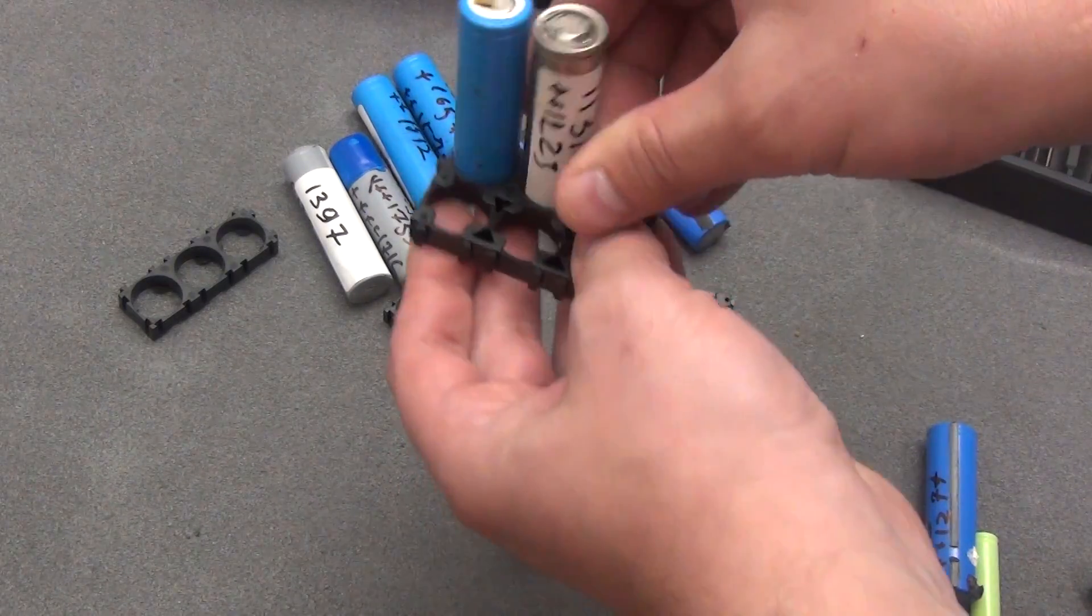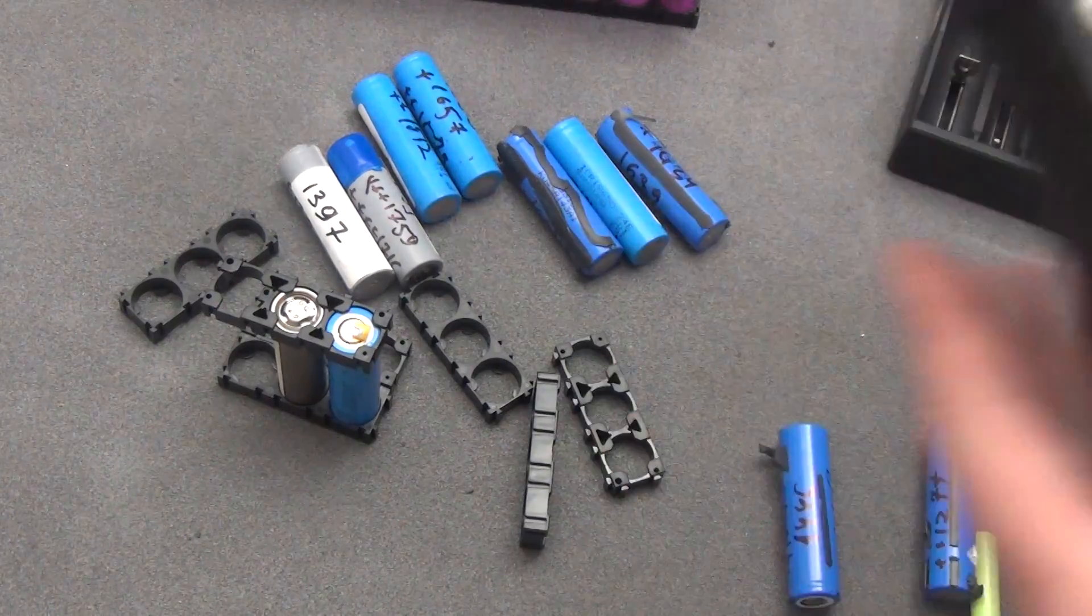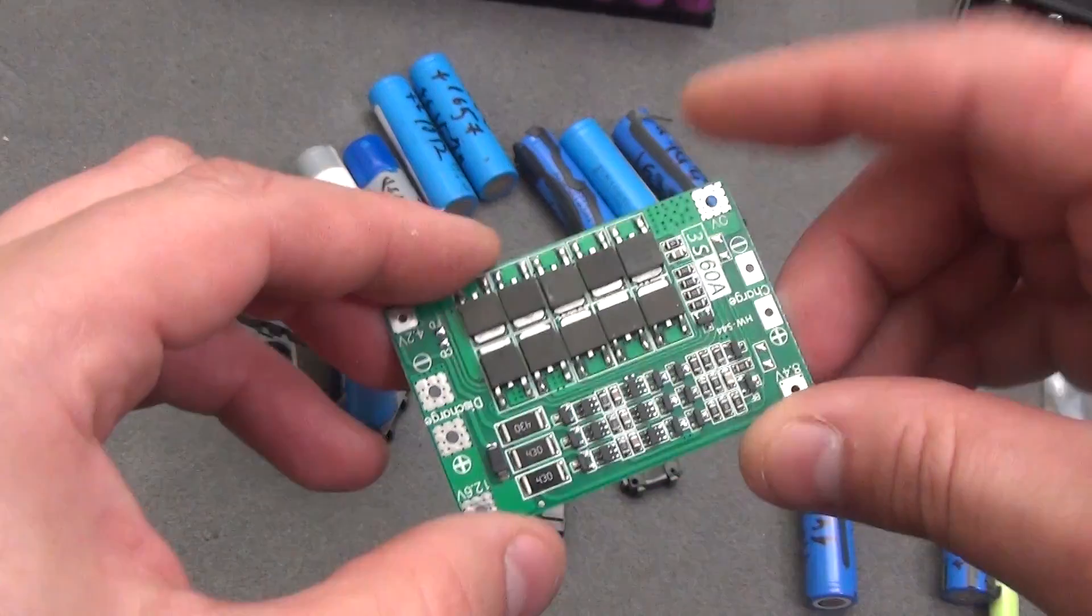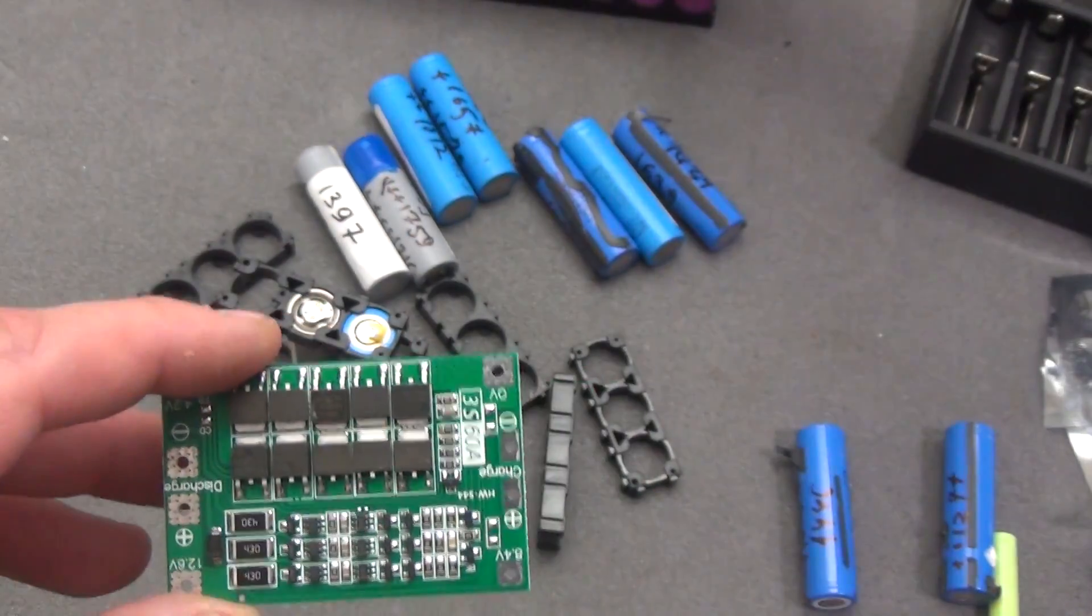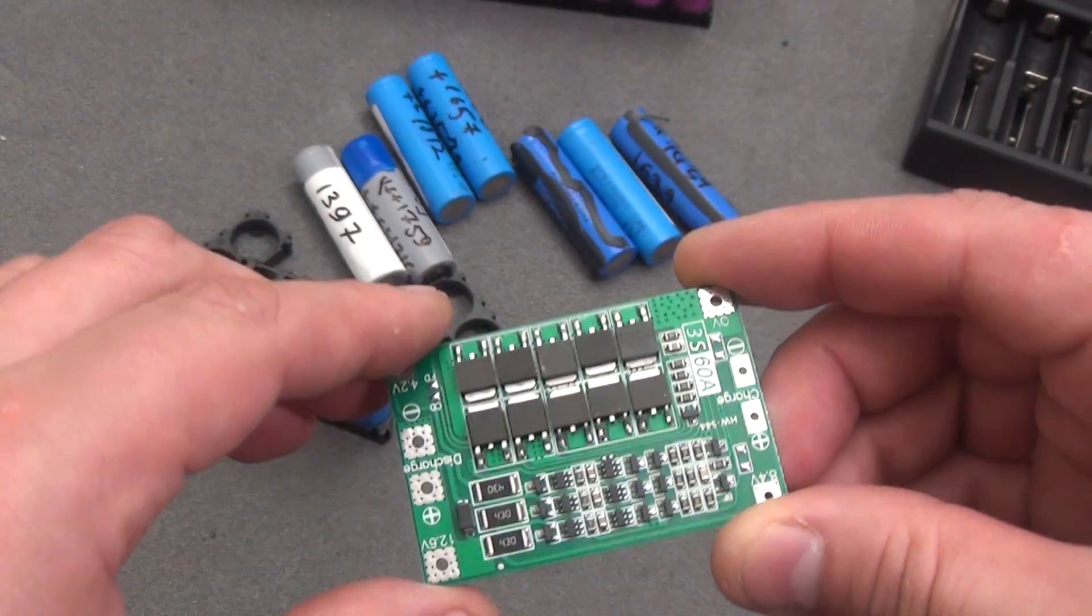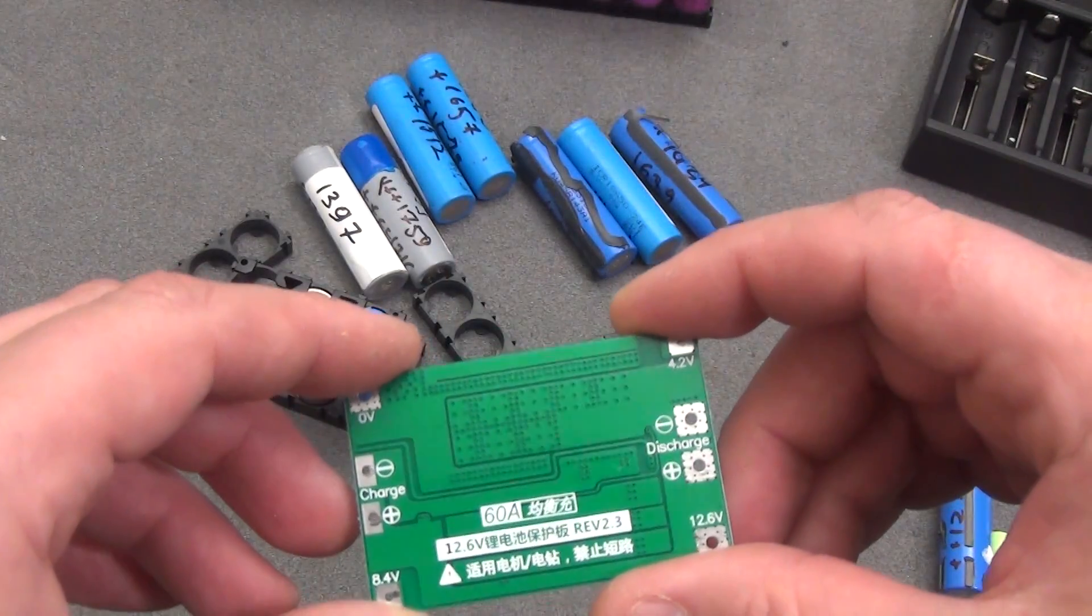Next, a tester to check the voltage. And for all this to work normally, you need a BMS-3S board, that is, 3 elements give us 12.6 volts. I took it with small balancers. The maximum current is 60 amperes, but I do not need so much.